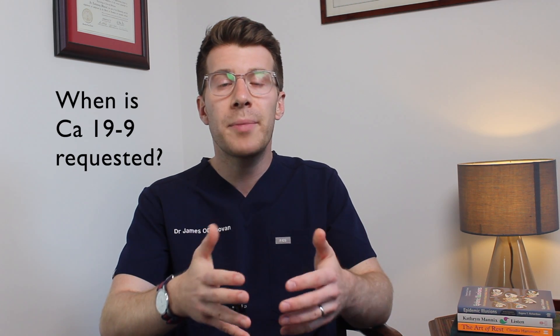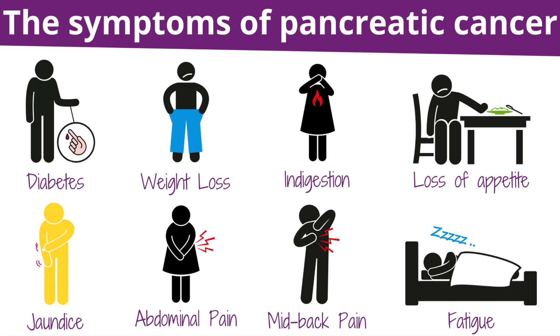So that brings us on to when it's requested. Because of its role in pancreatic cancer detection, CA19-9 may be requested along with other tests such as CEA, bilirubin and/or liver function tests when a patient has symptoms that may indicate pancreatic cancer — things such as weight loss and persistent jaundice.